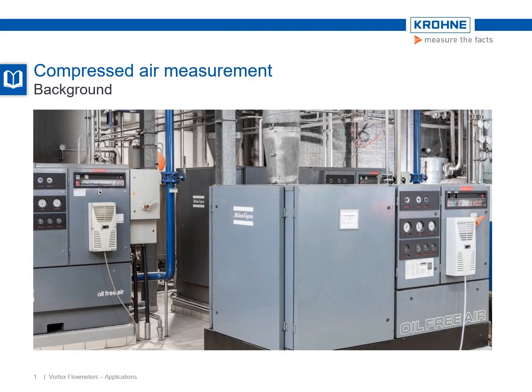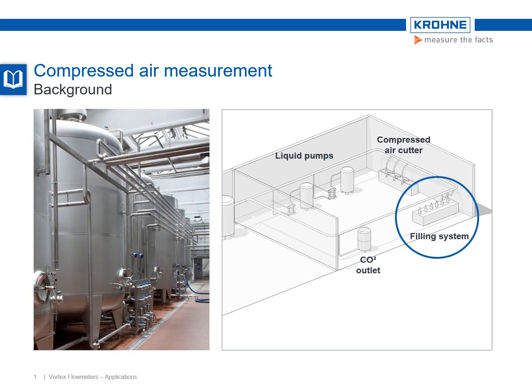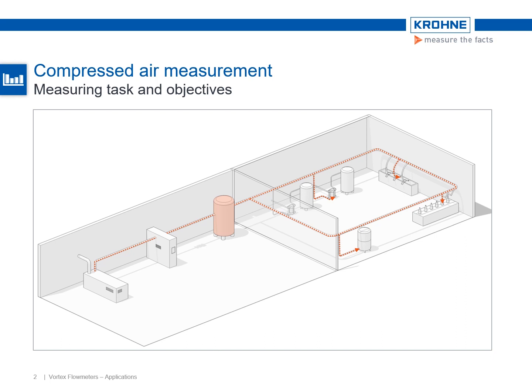Another area of application for vortex flow meters is in compressed air applications. Nearly every production plant has a compressed air network, but only rarely are those networks adapted to reflect actual consumption rates. The following example is from a beverage producer: in view of rising energy and production costs, the company decided to implement improved and greater monitoring of the compressed air network.